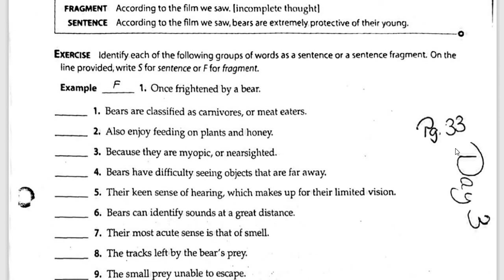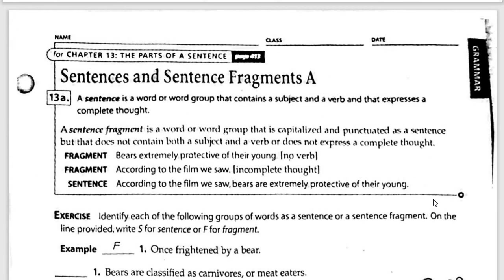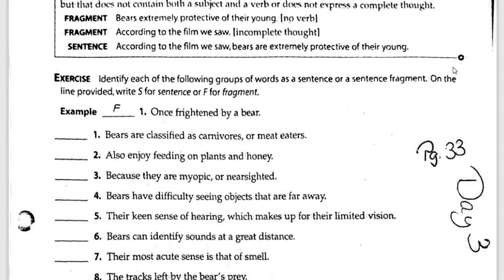Also on day three, the worksheets change — now it's no longer Six Traits but your Elements of Language workbook, which coincides with the purple language book we use in class. It's the same publisher, the same intention — part of a large set together. This is the grammar section of that workbook: sentences and sentence fragments, which has been our focus from the beginning of the year. This workbook is really cool because it explains everything so well — you've got an explanation, another explanation, examples of fragments, and then a clear example of a complete sentence.